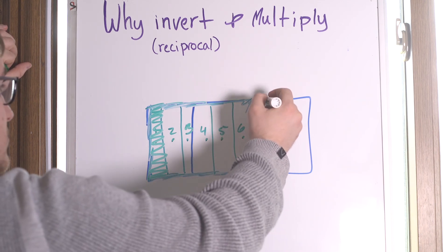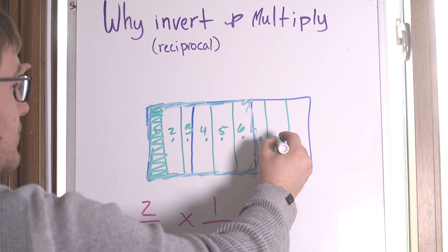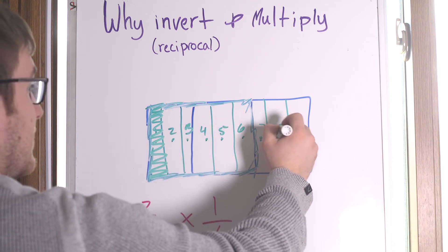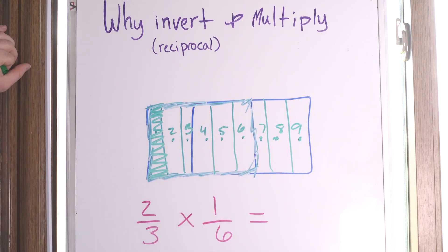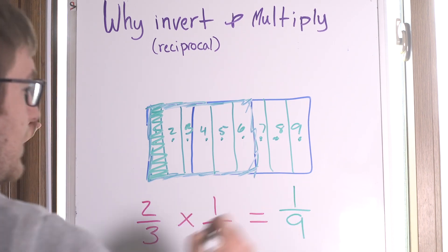But how much of the whole candy bar did you give? Well, I got to divide that last third into three, because that's what I did with the other thirds. So seven, eight, nine. How much did you just give away? You gave away one ninth of that candy bar.